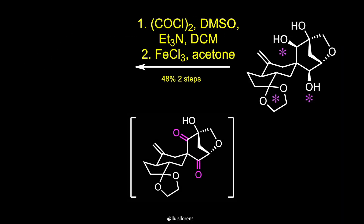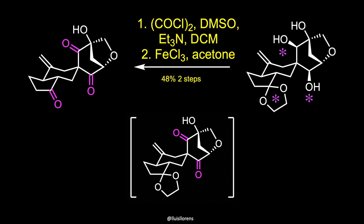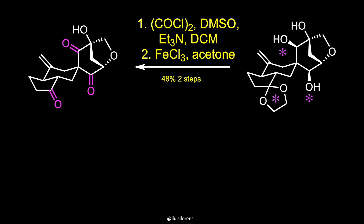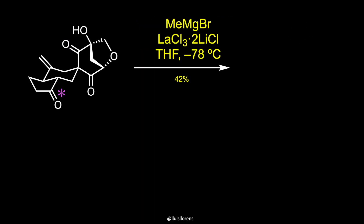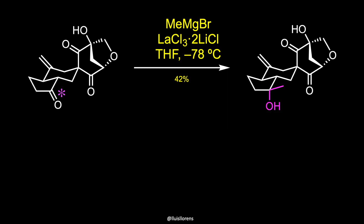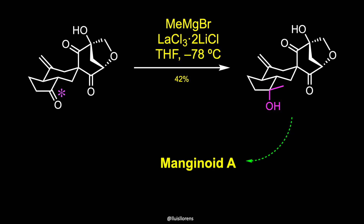Swern oxidation allowed the double oxidation of the secondary alcohols of the molecule. The use of iron trichloride was necessary to avoid racemization of the alpha-stereocenter upon ketal cleavage, an event that was observed when the deprotection was conducted with para-toluenesulfonic acid. Finally, a regioselective addition of a methyl group using methylmagnesium bromide completed the synthesis of Manganoid A.